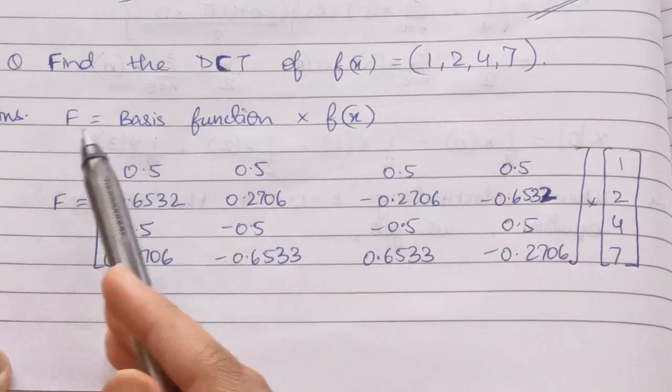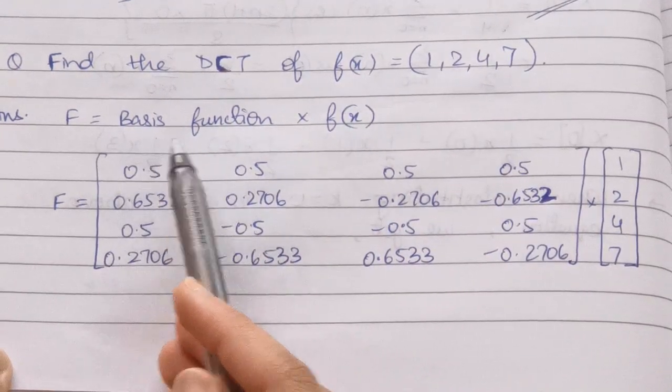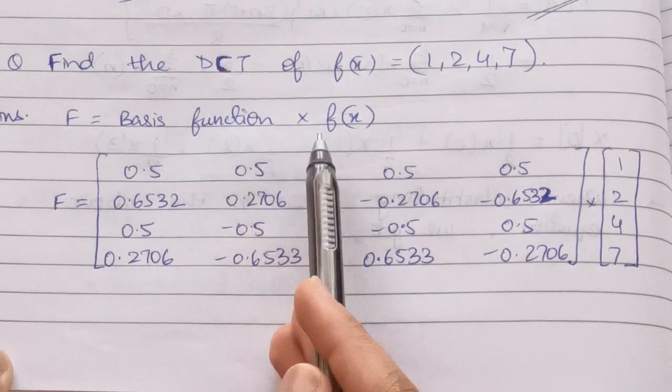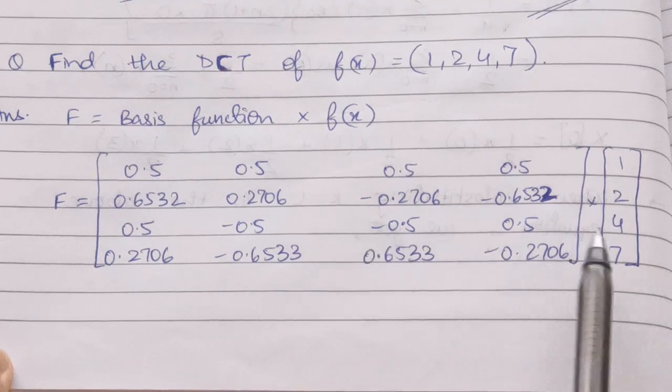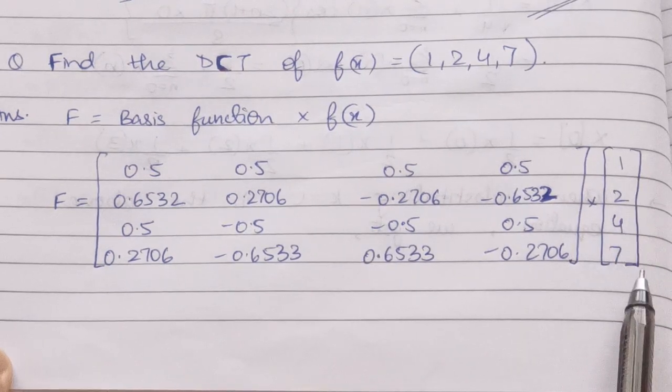That's why we'll be using the one-dimensional formula, which is F = basis function (also known as the kernel) × f(x). We'll just take this kernel and multiply it by the sequence.